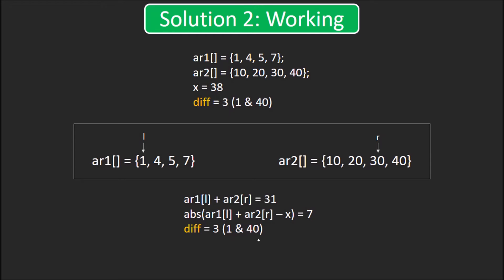So, diff becomes 3. Also, the sum 41 is more than x. So, according to the algo we saw earlier, we do r--. So, now r is at 30 and diff is 3 right now. Now sum is 31 and difference between the sum and x is 7. Variable diff already has a lesser value, so no need of updating it. Now, since the sum 31 is less than x, we do l++.